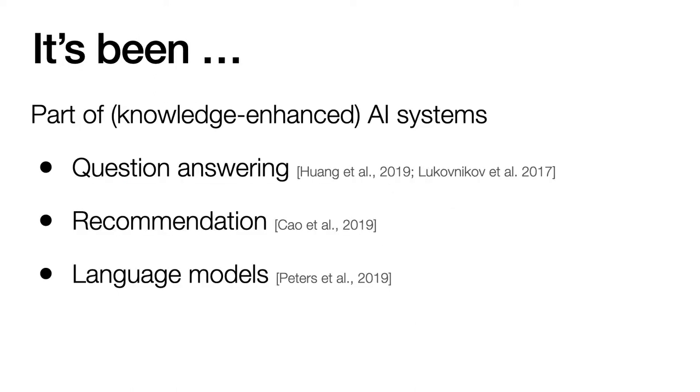And to make things worse, these knowledge graphs that are imperfect have been built into knowledge-enhanced AI systems, for example, some question-answering systems, recommendation systems, and knowledge-enhanced language models.